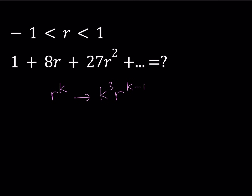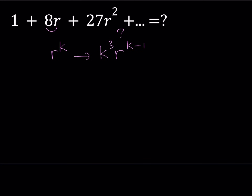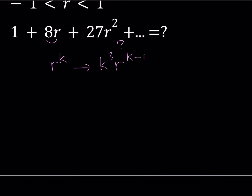If you look at our terms carefully, for example, the second term for k equals 2 is going to give you exactly this form: 2 to the third power multiplied by r to the power 2 minus 1, which is r. So how do I get k cubed r to the power k minus 1 from r to the power k? Here are a couple of things we're going to be doing back to back.